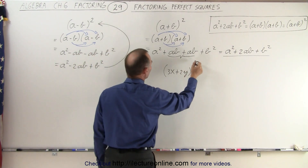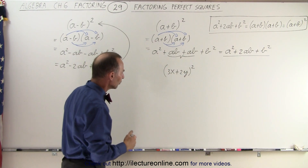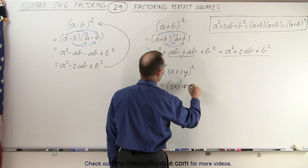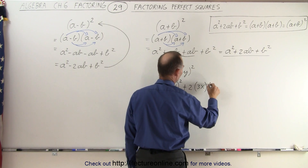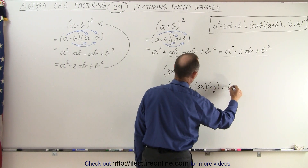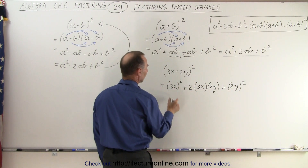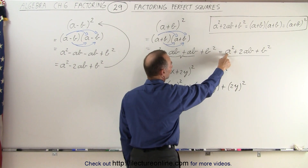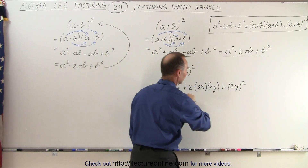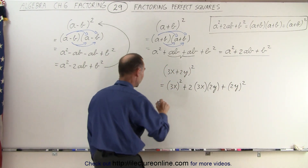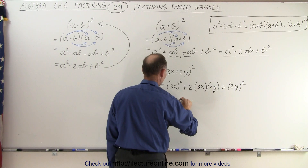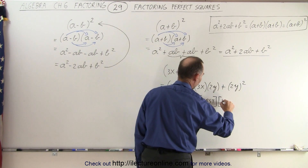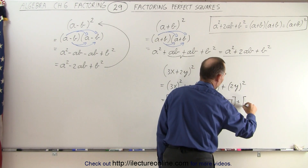Let's practice with this quantity right here. We're going to write this out and multiply it. This can be written as the first term squared, plus 2 times the first term, 3x, times the last term, 2y, plus the last term squared, which is 2y squared. Notice it is the first term squared plus twice the first term times the second term plus the last term squared — the first term squared plus twice the product of the first times the last plus the last term squared.